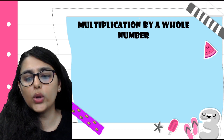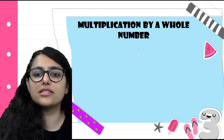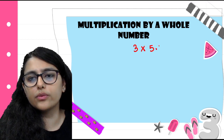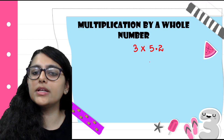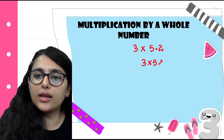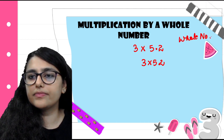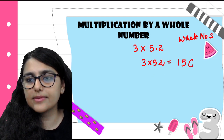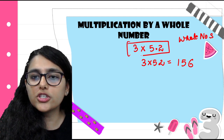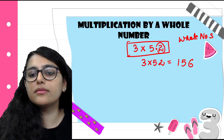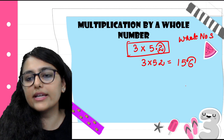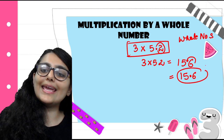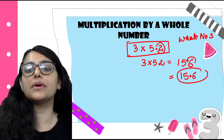Now we have multiplication by a whole number. For 3 × 5.2: forget the decimal for now. Multiply as whole numbers: 52 × 3 = 156. Now count how many digits are after the decimal in the original question — just 1 digit after the decimal. So from the right-hand side, count 1 place and put the decimal. My answer is 15.6.